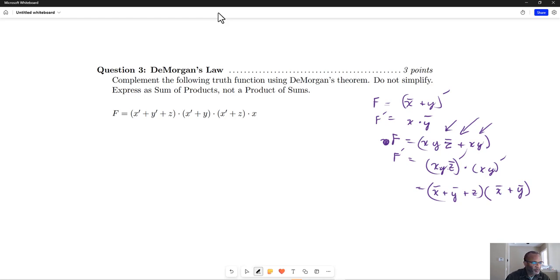So let's try it with this. Each one of those will be complemented, right? If I'm going to complement all of this, then each one of those individually will be complemented and what was ANDed will become ORed.